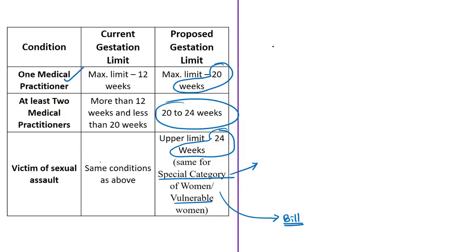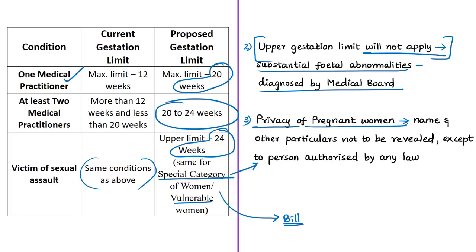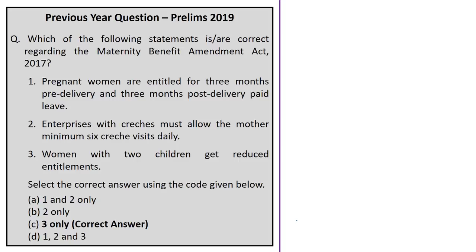The amendment also proposes an exception: if there are substantial fetal abnormalities diagnosed by a yet-to-be-constituted medical board, the upper gestation limit will not apply — time limits are not applicable for substantial fetal abnormalities. The composition, functions, and other details of this medical board will be prescribed subsequently in the rules under the MTP Act. Another salient feature is a provision for maintaining privacy of women — the name and other particulars of women whose pregnancy has been terminated shall not be revealed to anyone except those authorized by law.